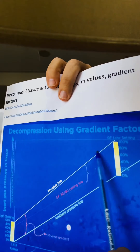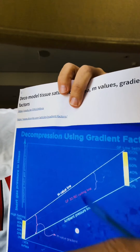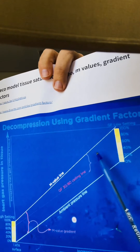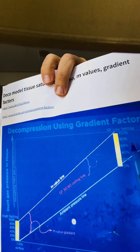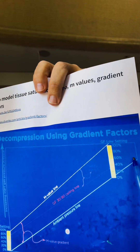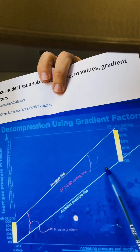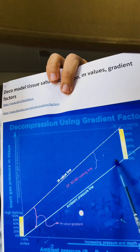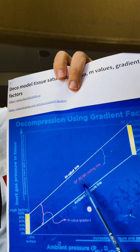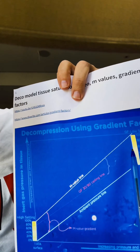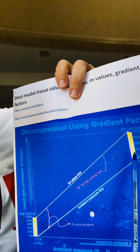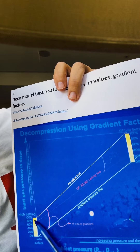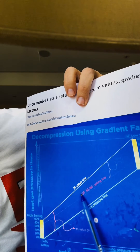It's a little awkward because although the line is pointing down, as you move in this direction you're moving from increased pressure — you're deeper — and moving towards the surface. As you go in this direction you're ascending, lower pressure, lower pressure. You connect the line between the low gradient factor and the high gradient factor, which is what's going to let you out of the water. And here's the M value.